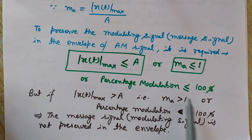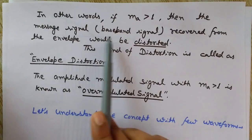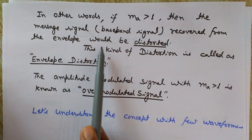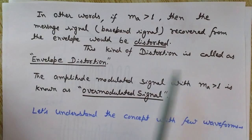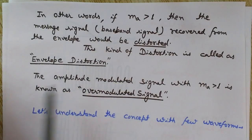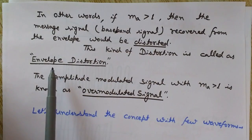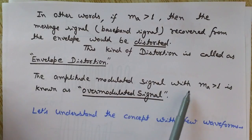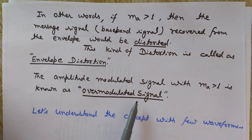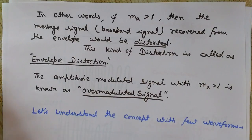If ma is greater than one, the baseband signal (message signal) recovered from the envelope would be distorted. This kind of distortion is called envelope distortion, because we are getting a distorted modulating signal from the envelope of the amplitude modulated signal. An AM signal with ma greater than one is known as an over-modulated signal, since xt_max has become more than the maximum amplitude of the carrier wave.